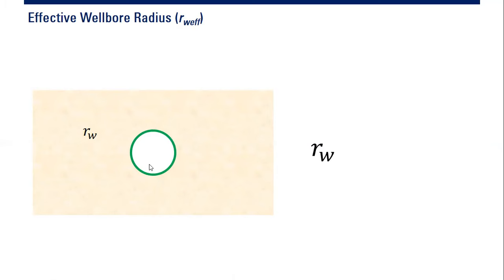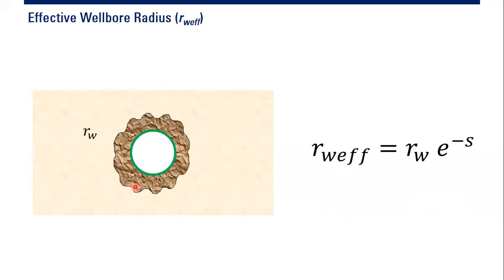We start from a well — it can be an oil well, a gas well, or a geothermal well. This well sits within the reservoir, and the wellbore radius of this well is rw. Now let's say this well has formation damage — it is damaged — and this is the zone of the damage surrounding the well.